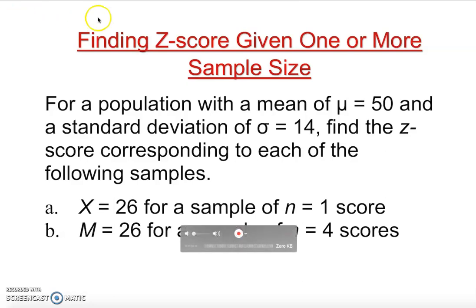Okay guys, finding z-score given one or more sample size. If you look into this problem, as you clearly see, for a population with a mean of 50 and standard deviation is 14, find the z-score corresponding to each of the following samples.